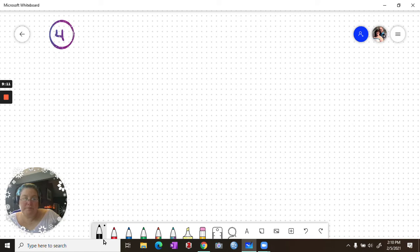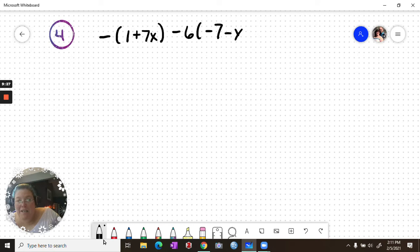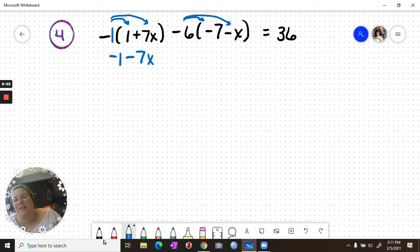Equation number 4. Negative times the quantity—so that's technically negative 1 times the quantity—1 plus 7x minus 6 times negative 7 minus x equals 36. So now I am going to distribute my negative 1. Again, you can use the box method if you need to. Negative 1 times 1 is negative 1. Negative 1 times 7x is negative 7x. Negative 6, I'm going to take the sign with the 6. Negative 6 times negative 7 is positive 42. Negative 6 times negative x is positive 6x. Equals 36.